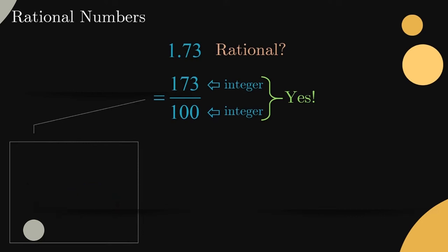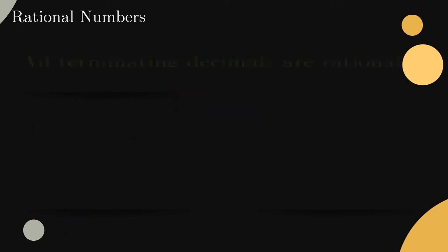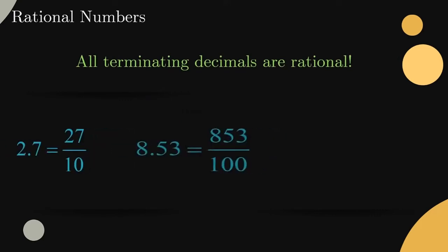Alternatively, we could start by writing 1.73 as a fraction with a denominator of 1. We know that multiplying both the numerator and denominator by the same non-zero number does not affect a fraction's value, so we can use multiplication by 100 to get rid of the decimal in the numerator. That leaves us with integers for both the numerator and denominator. Based on what we've seen here, we can quickly conclude that all terminating decimals are rational numbers.